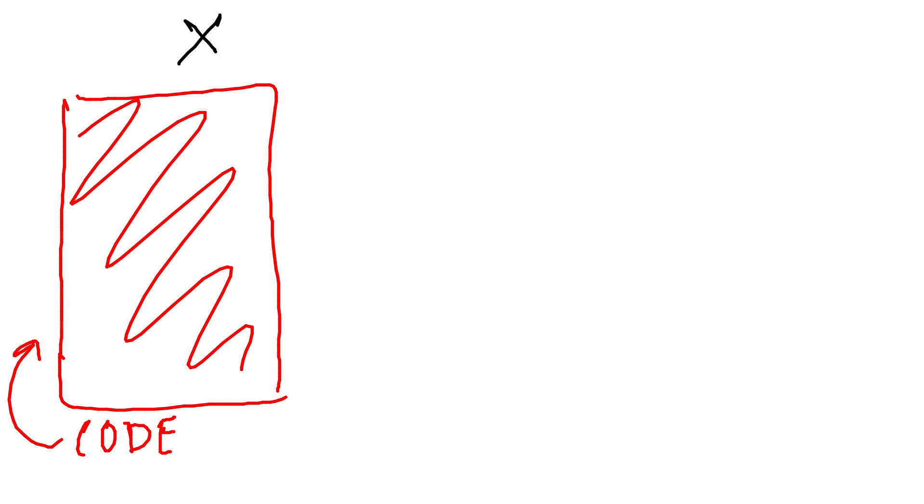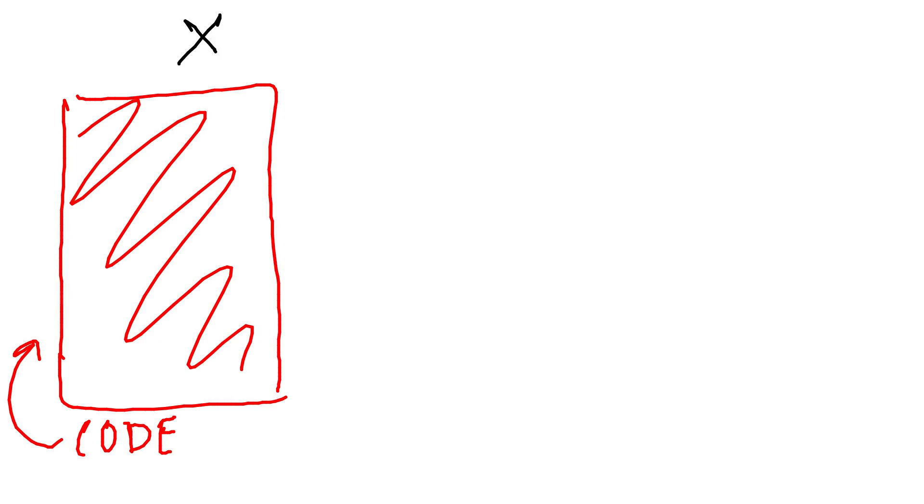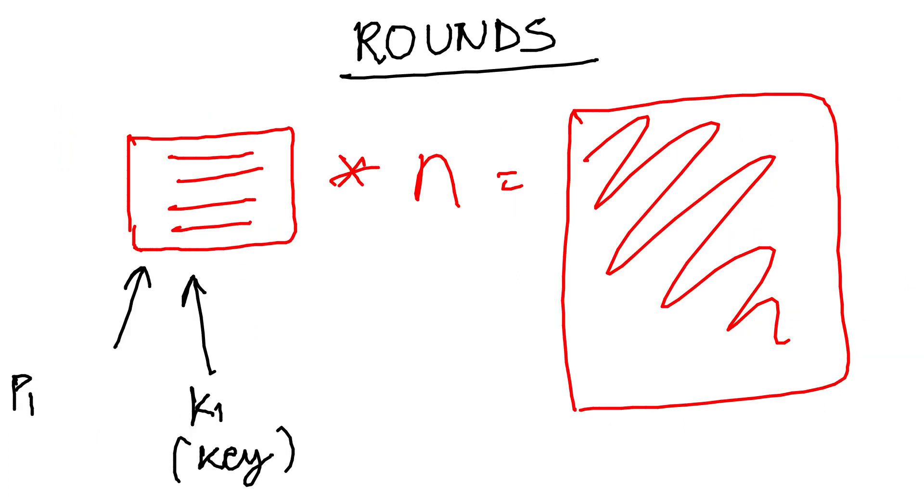So, block ciphers are not some gigantic algorithms, but just a repetition of rounds. You can either have a very strong algorithm but a long one, or you could have a small but not so strong algorithm. But if you repeat it over and over again, it becomes quite strong. This is exactly what happens in block ciphers. Let's discuss about rounds.